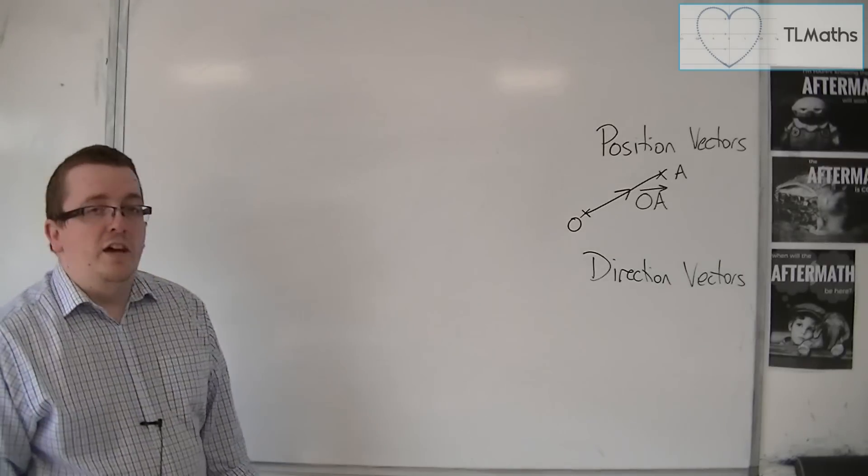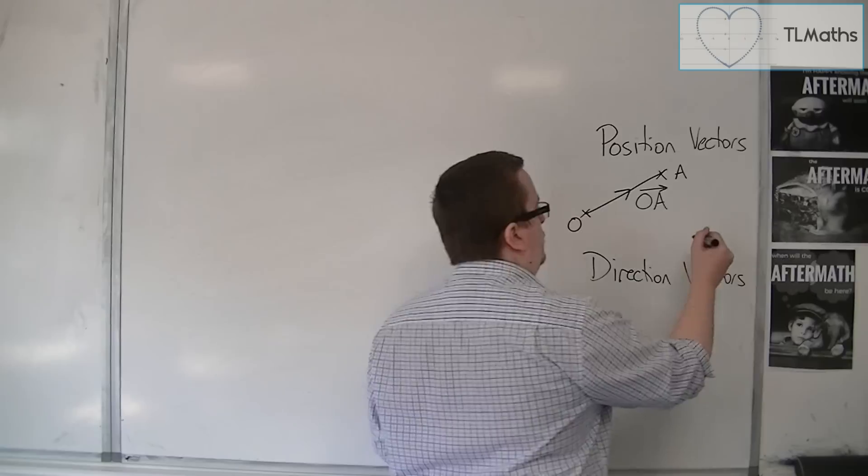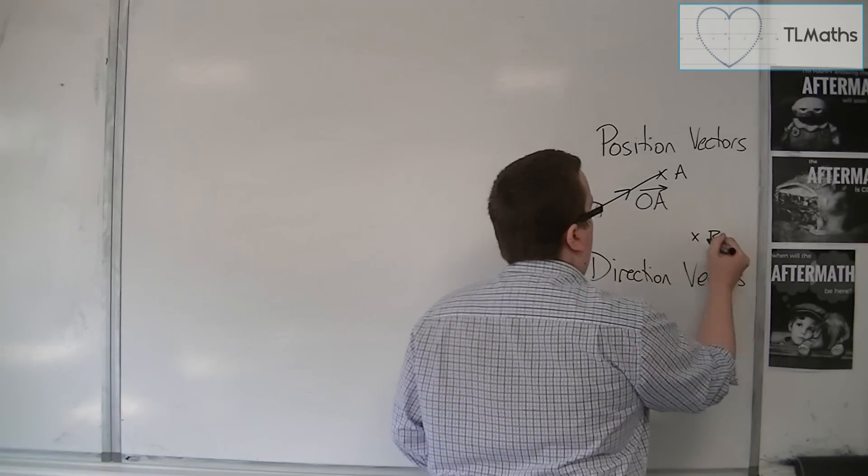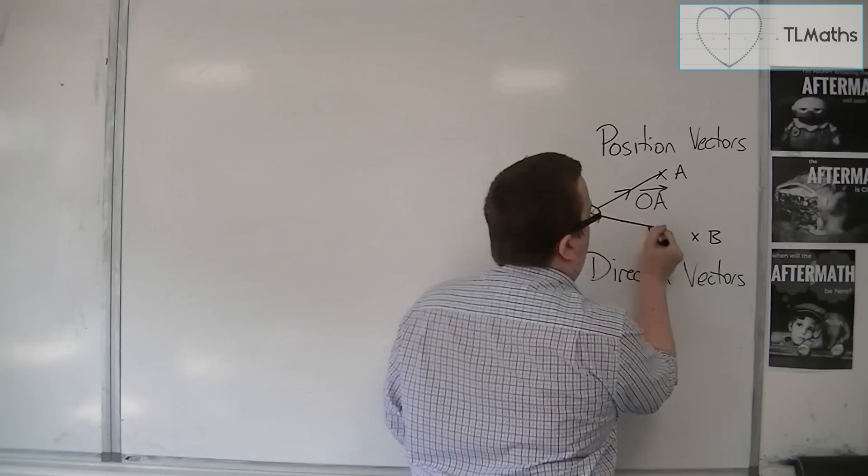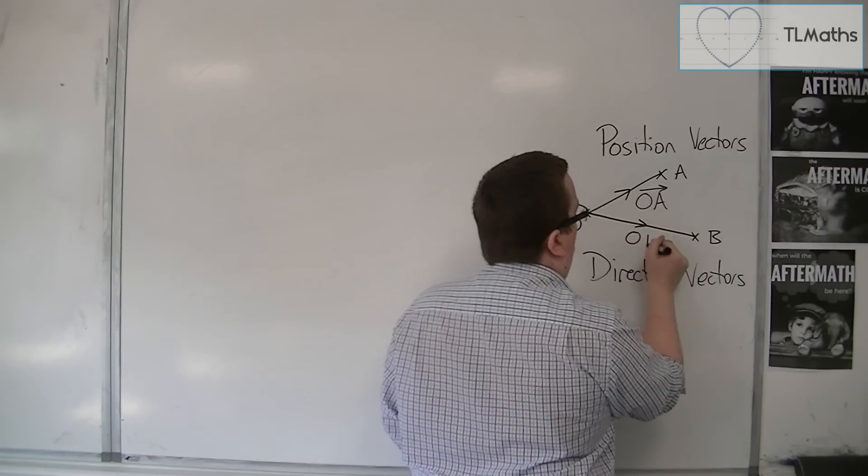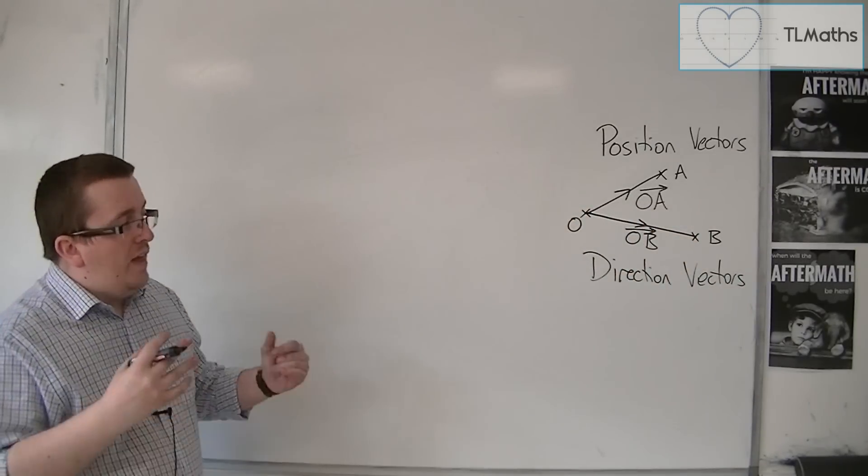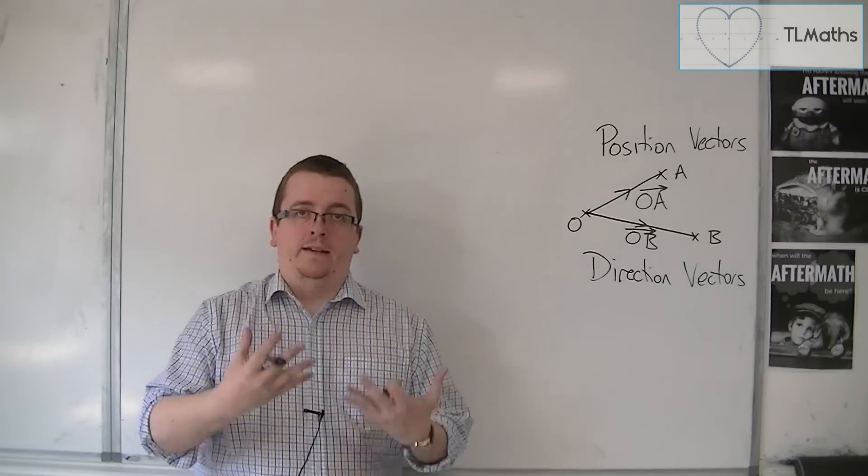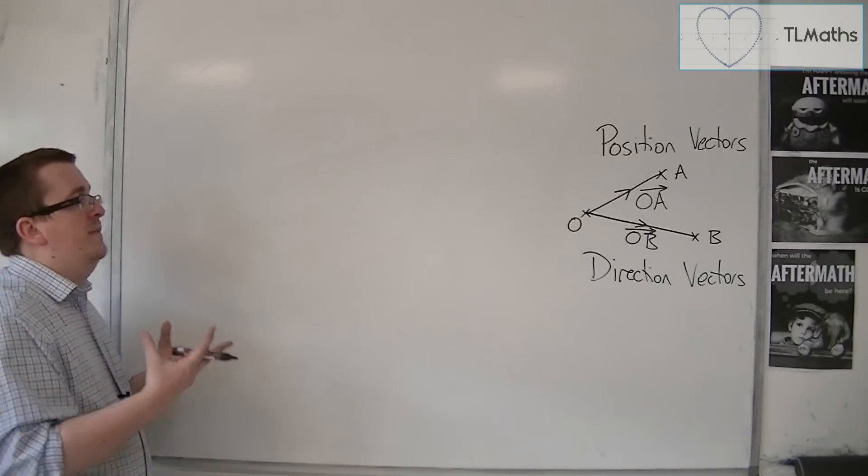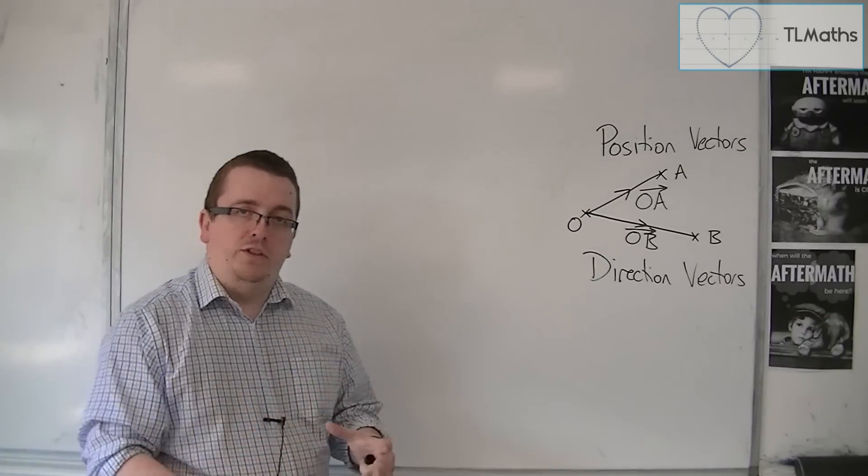So if you had another coordinate B, which is over here, then the position vector of B is OB. So that is what a position vector is. It tells you how to get from the origin to a coordinate.